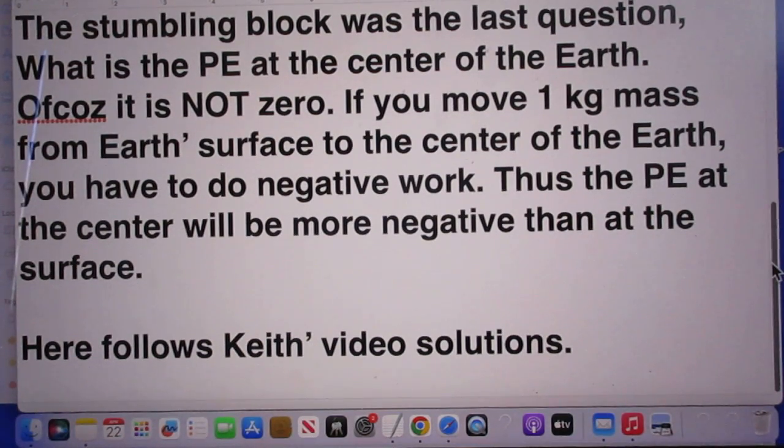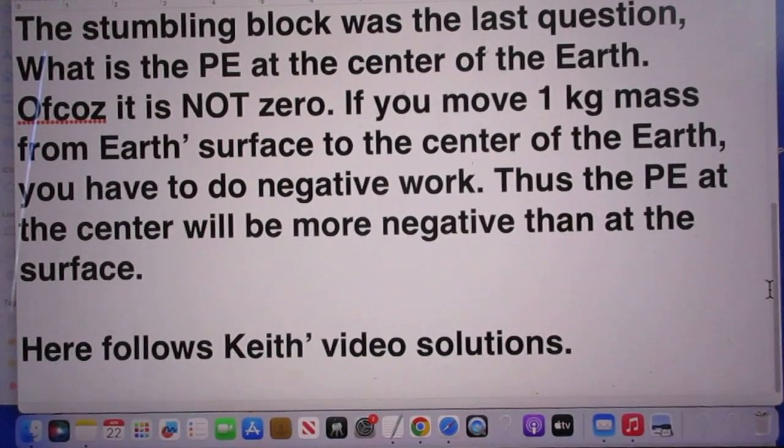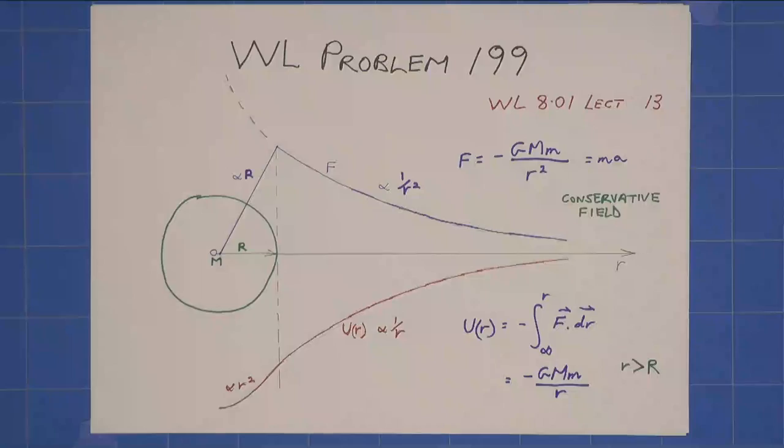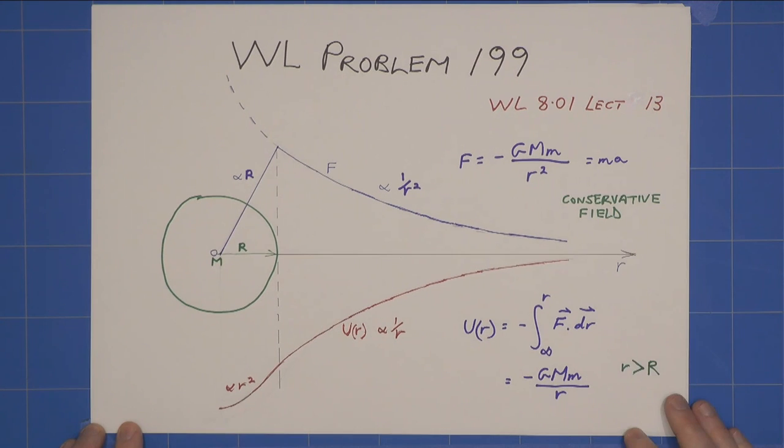That was the stumbling block. If you're ready, here follows Keith's video solutions. This is Keith's solution to Walter Lewin's problem 199, and it's a gravitational problem. A lot of this is discussed in his lecture 13 of 801.